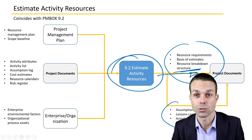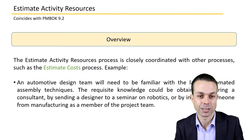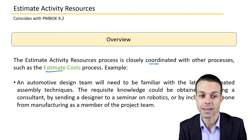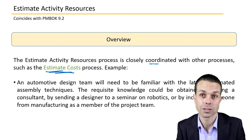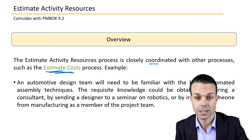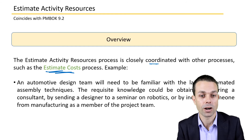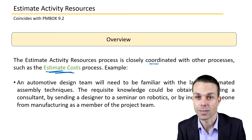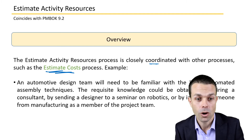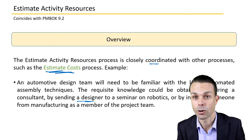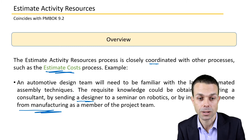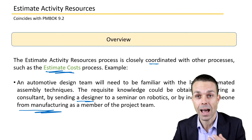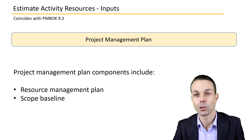Estimate activity resources is closely coordinated with other processes, such as estimating costs, because we need to know how much acquiring people or materials will cost. For example, an automotive design team may need familiarity with the latest automated assembly techniques. This knowledge could be obtained by hiring a consultant, sending a designer to a robotics seminar, or including someone from manufacturing as a team member — there are many ways to acquire resources.